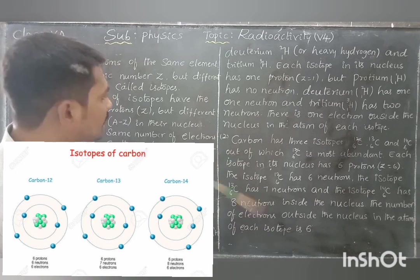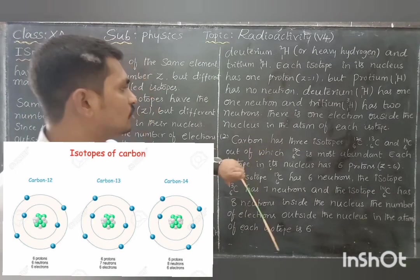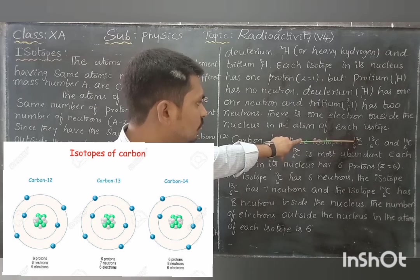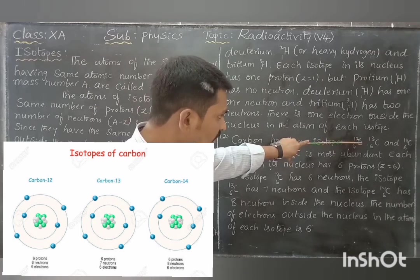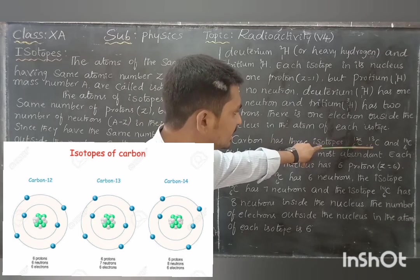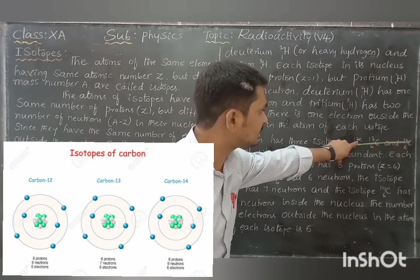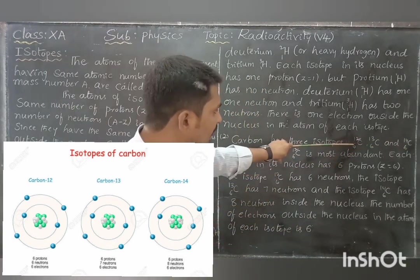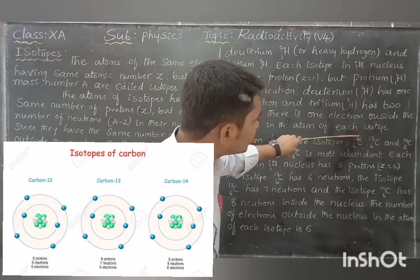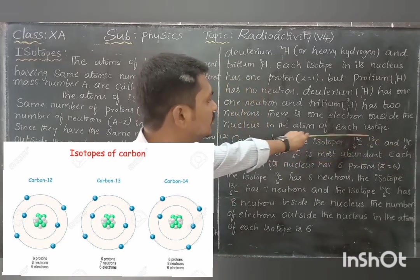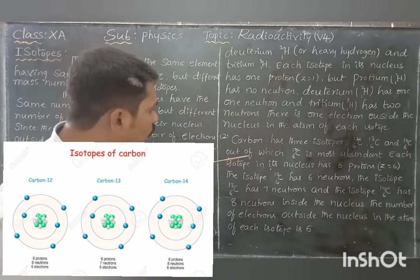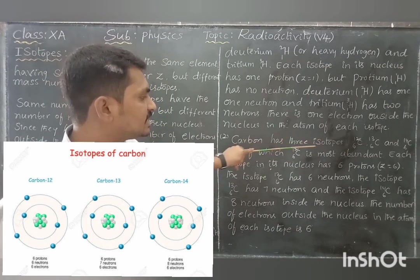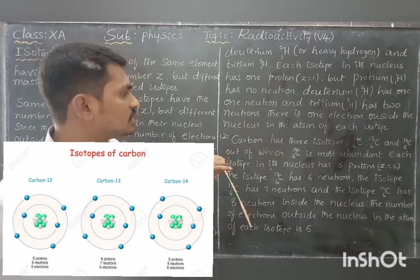The next example is carbon. Carbon also has three isotopes. Carbon's atomic number is 6. The three isotopes are C-6-12, C-6-13 and C-6-14. The atomic number is the same while the mass numbers are 12, 13 and 14 respectively. Out of these three, C-6-12 is the most abundant.